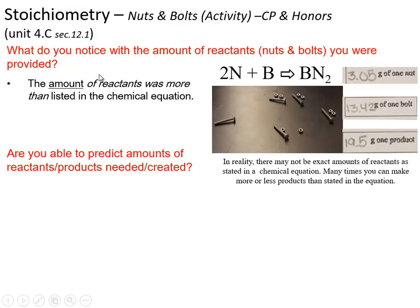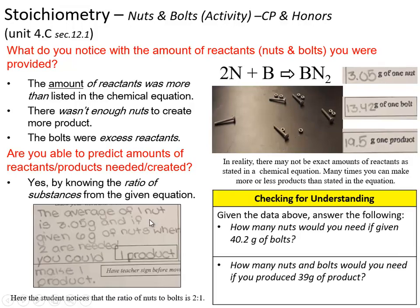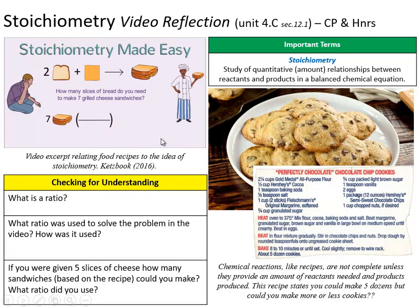So prior to learning about stoichiometry, we did an activity with nuts and bolts. I gave you an equation — a recipe — to make a certain type of product with the bolts and nuts. And in that activity, you had to figure out how many products you can make with a given amount of nuts and bolts. As we move on from this activity, we ended up learning a little bit more about stoichiometry based on this analogy of making grilled cheese sandwiches.